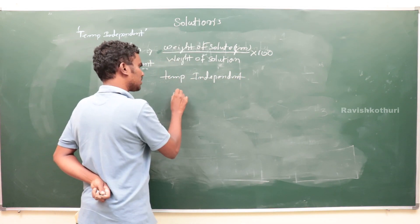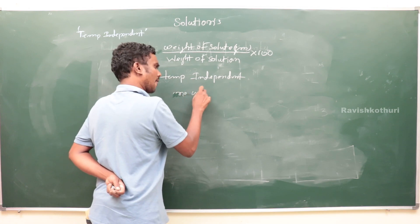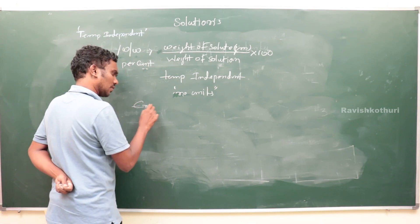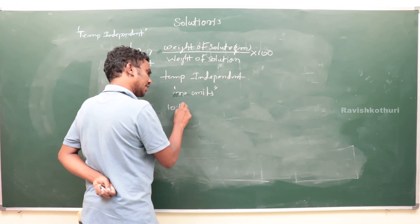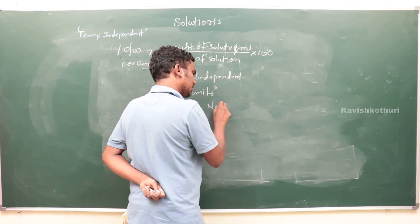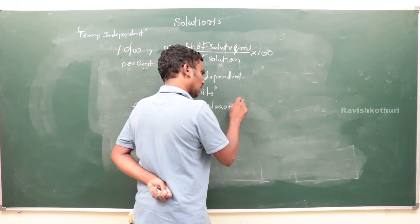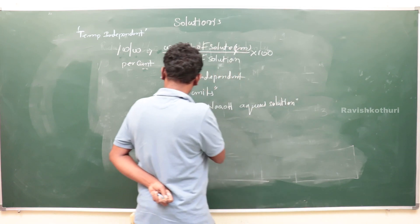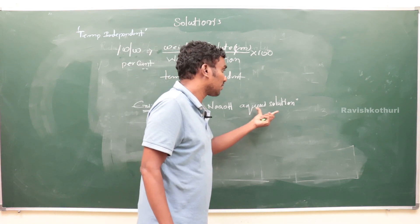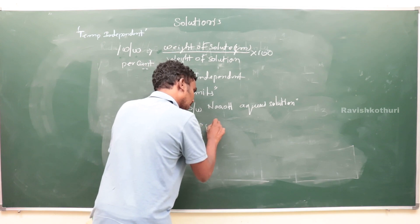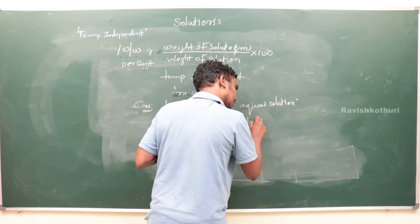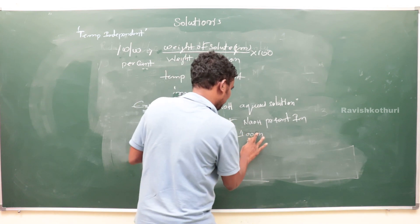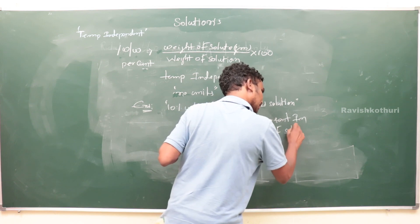This is temperature independent and it has no units. For example: a 10% weight by weight NaOH aqueous solution means 10 grams of NaOH present in 100 grams of solution.